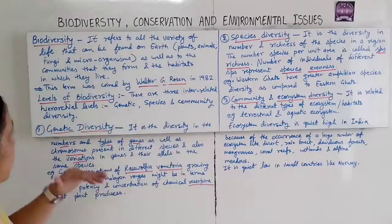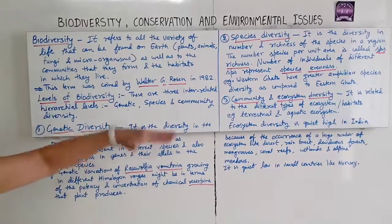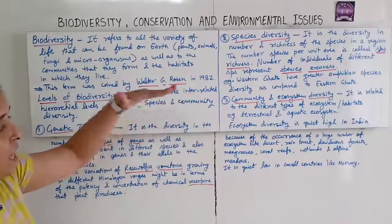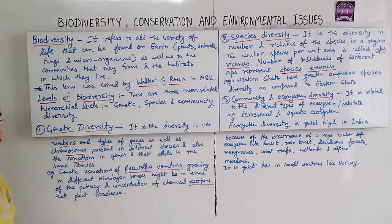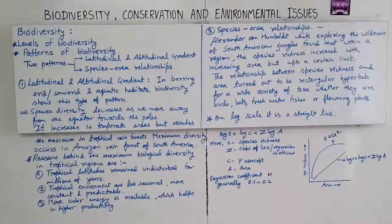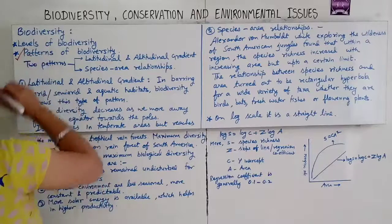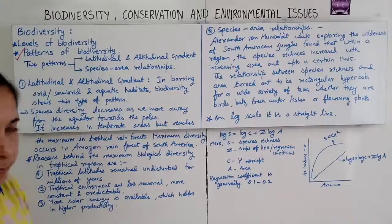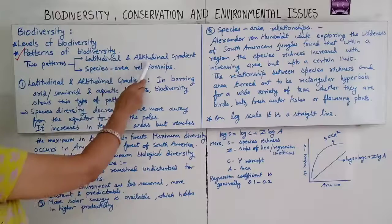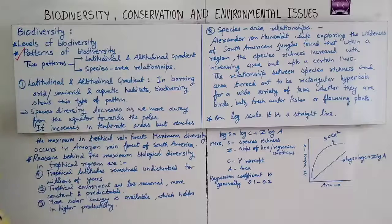So those are the three levels of biodiversity: genetic diversity, species diversity, and community and ecosystem diversity. Next are the patterns of biodiversity. There are two patterns: latitudinal and altitudinal gradient, and species-area relationship.